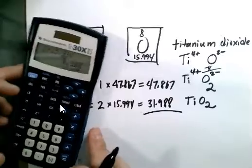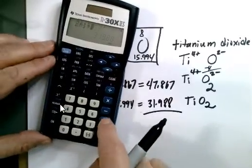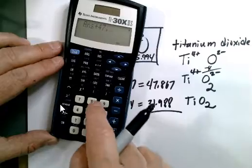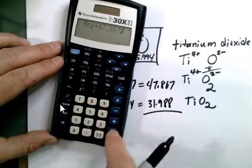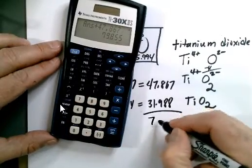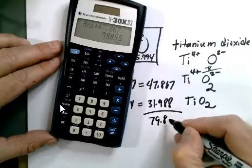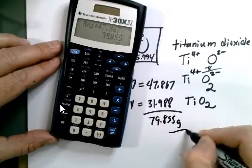Let's add these together: 31.988 plus 47.867 equals 79.855 grams per mole.